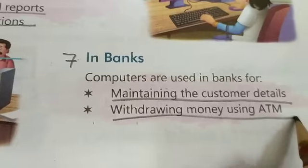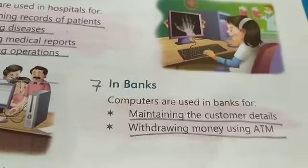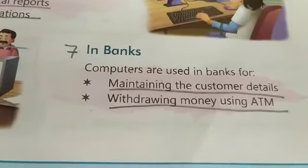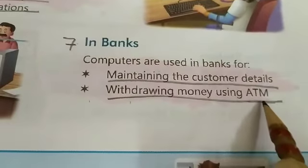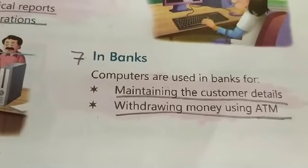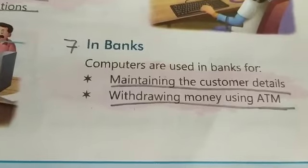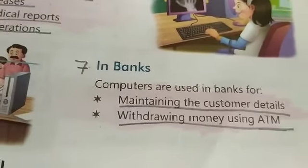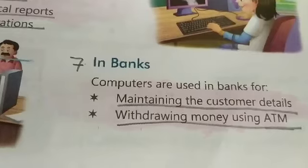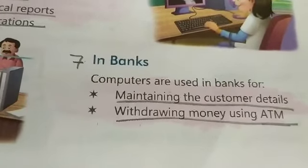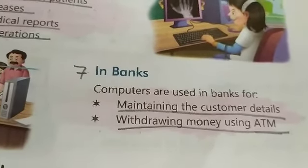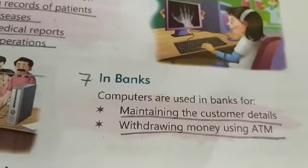Second point hai — withdrawing money using ATM. Pehle bank mein form fill karte the, line mein lagte the, tab paise nikalte the. Abhi bhi hota hai, but iska ek option bhi hamare paas hai — ATM machine. Jahan pe humko bas jaake koi form fill nahi karna hai. Hamare paas ATM card hota hai, usko ATM machine pe lagate hain, password daalte hain, jitna amount daalte hain utna paisa us machine ke dwara mil jata hai. Iske wajah se hamar samay bhi bachta hai aur jaldi kaam ho jata hai. Lekin yeh kisse ho raha hai? Machine ke dwara — aur us machine ke andar computer feed hota hai. Us machine mein hamari puri detailing hoti hai, tabhi wahan se paisa mil paata hai.